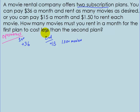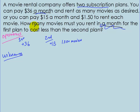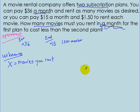How many movies you rent in a month for the first plan to cost less than the second. Our unknown is x — the number of movies you rent. The first plan must cost less than the second plan. So the first plan is on the left, the second on the right, with a less-than inequality: first is less than second.